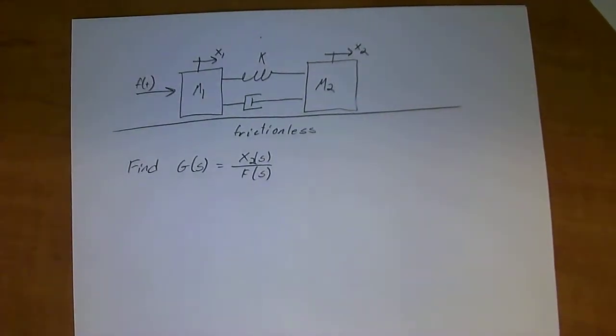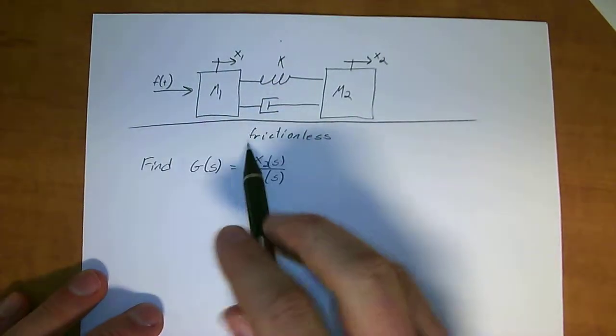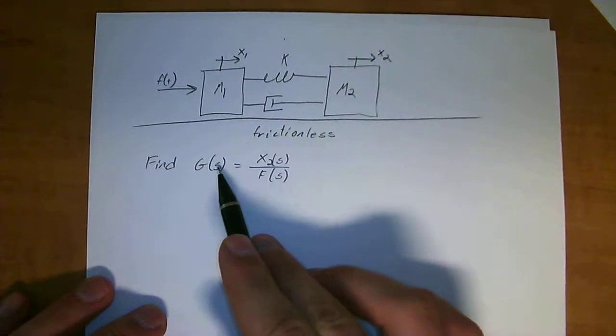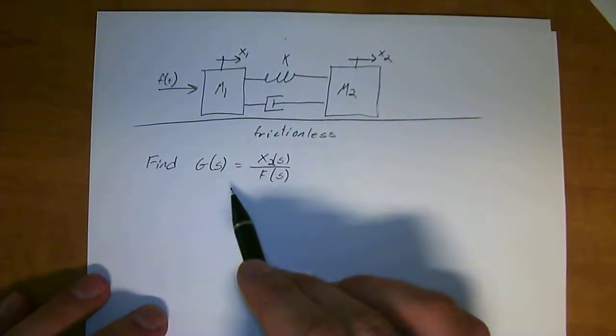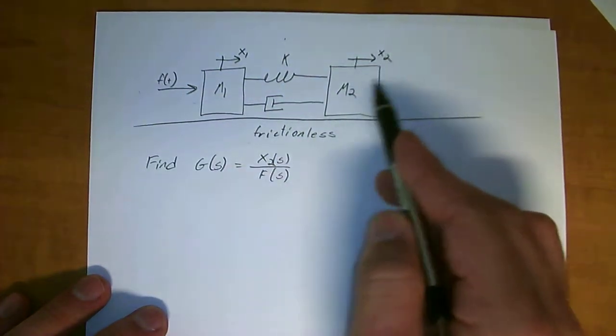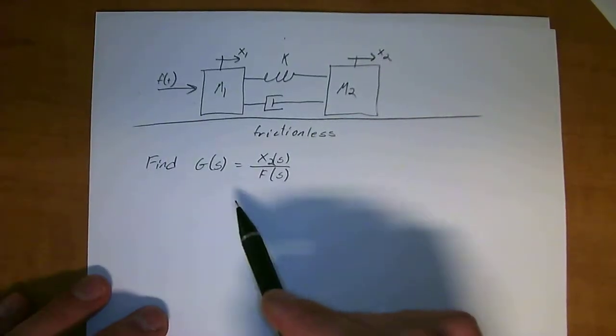Okay everyone, welcome to Controls Systems Analysis and Design. Today we have a basic linear spring mass damper system, of which we have to find a transfer function for. So given an input force of f of t and an output of x of 2 over here, what is the transfer function?